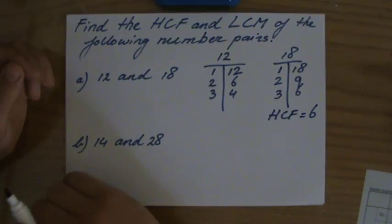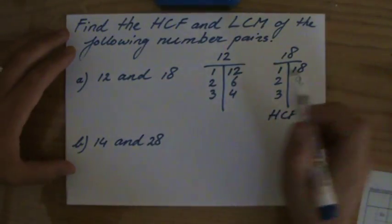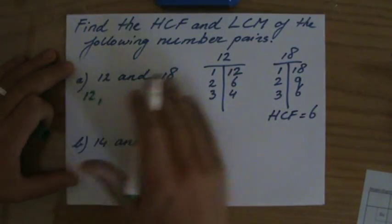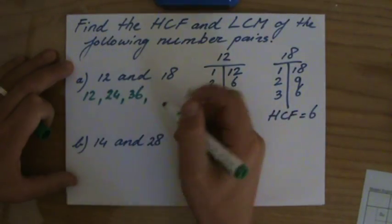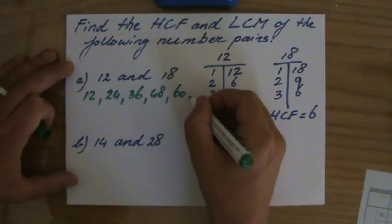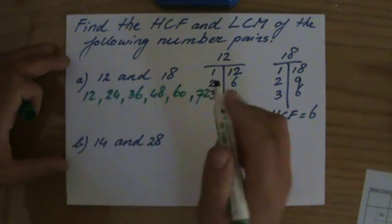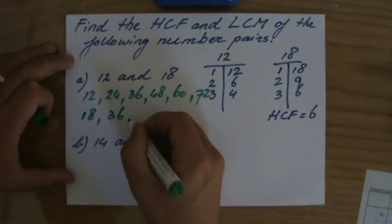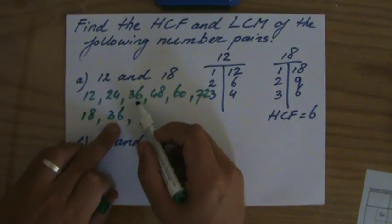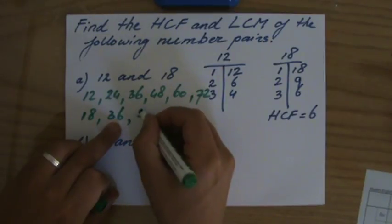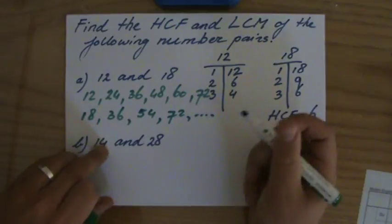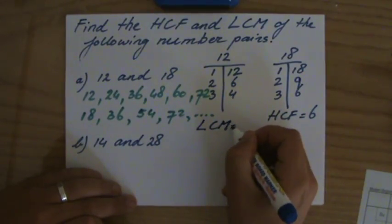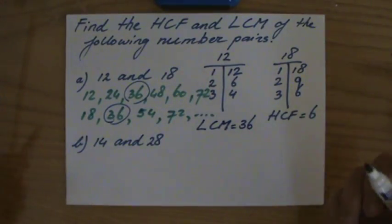Now what is the lowest common multiple of 12 and 18? We're talking about multiples and timetables, so let's write a few down in green. The multiples of 12: 12, 24, 36, 48, 60, 72... Let's do the same for 18: 18, 36 — and I already see a common multiple! Let's write one more: 54, 72. They have 72 in common as well, but the LCM, the lowest common multiple, is 36.